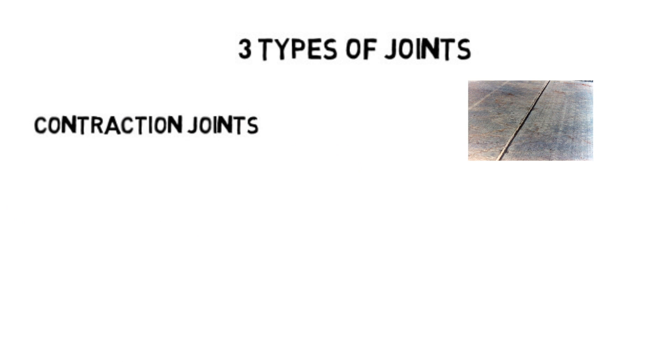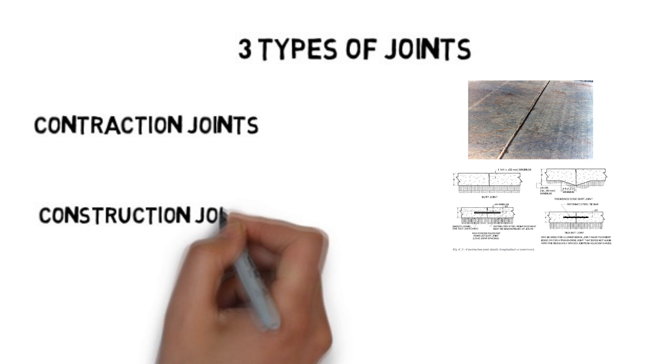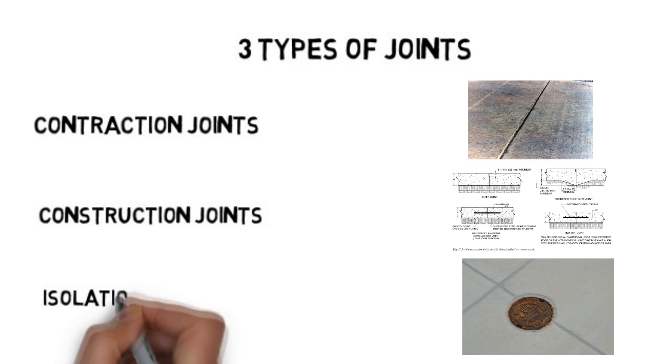There are three types of joints: contraction joints, construction joints, and isolation joints.